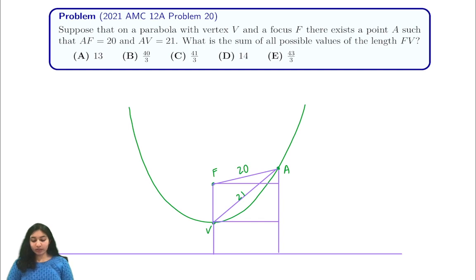So the first thing that we do is know that by definition of a focus, our length A to the directrix is also 20. So this length here, we can write down as 20. Then we're going to let the length FV be X, and we want to try and figure out what all possible X's are.